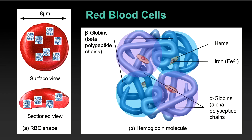Each individual hemoglobin molecule doesn't carry a lot of oxygen on its own — the combined effect of all of these molecules is what allows us to take in measurable amounts of oxygen and consume it. But on a one-off basis, each one does not carry very much oxygen. These are the sites of oxygen binding. These are the major things packed within each red blood cell — hemoglobin is the major stuff that fills each red blood cell.